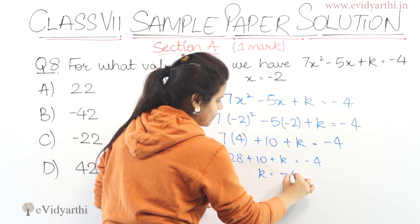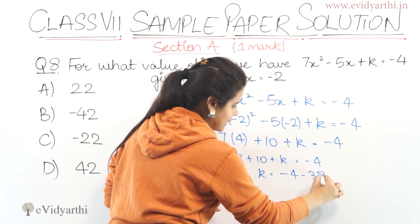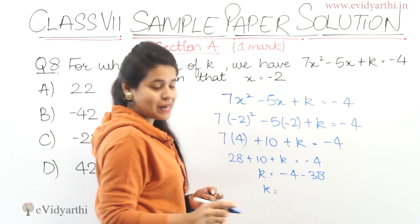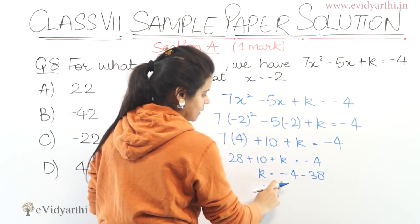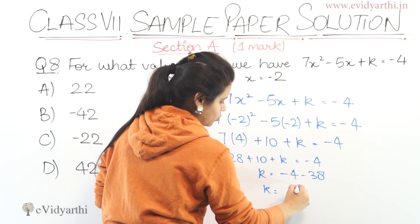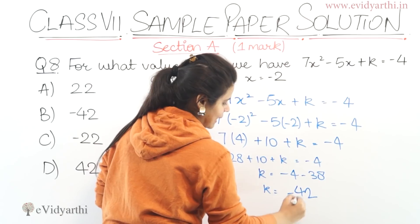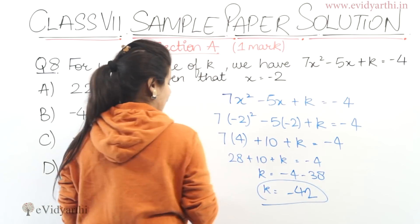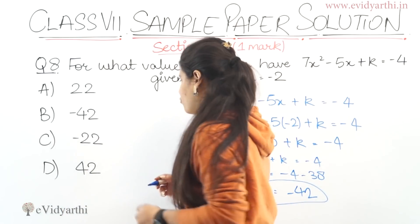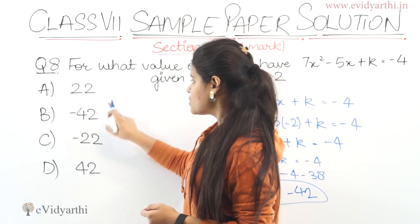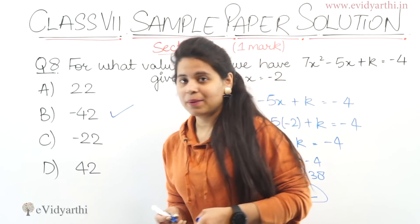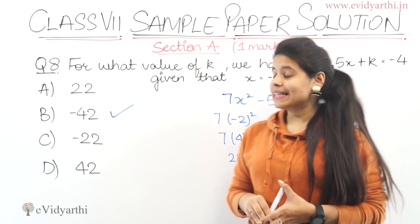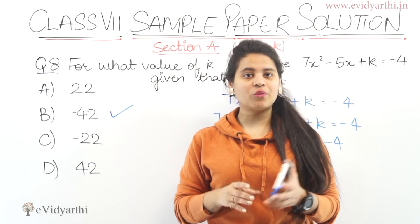So 28 plus 10 is 38. Agar 38 ko doosri taraf bhejenge toh ho jayega minus 38. So k ho jayega minus 4 minus 38, which gives minus 42. So humane paas k ki value aa gayi minus 42. Minus 42 is in option B, so this will be the answer. This was the last question of Section A.